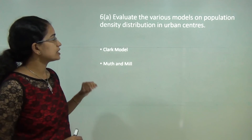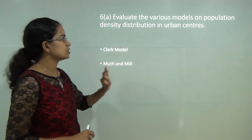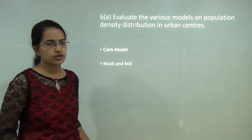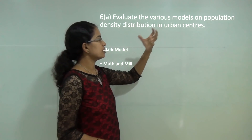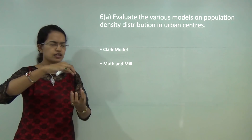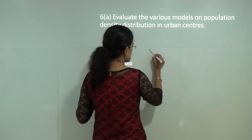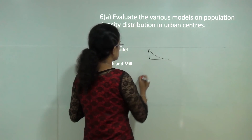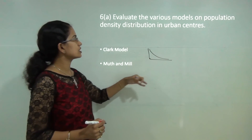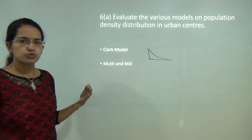The next question asks to evaluate various models on population density distribution in urban centres. This is a classic question testing knowledge of Clark's model, which states that as you move away from the CBD, the density of population decreases exponentially. Later, Muth and Mills elaborated on this model, explaining similar patterns in population distribution and how density varies as you move away from the city centre.